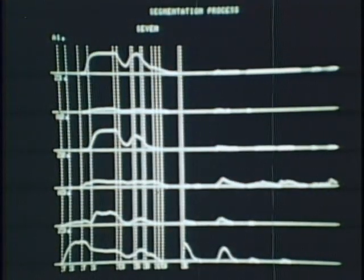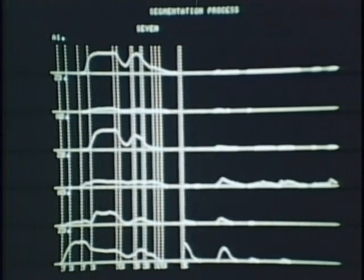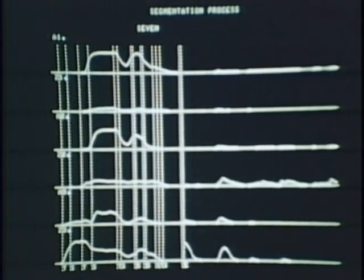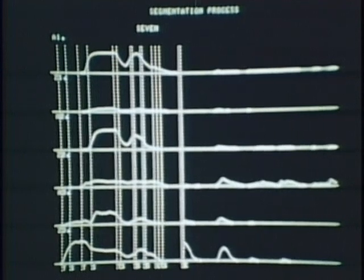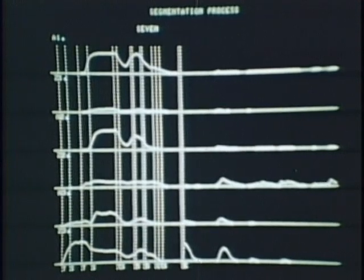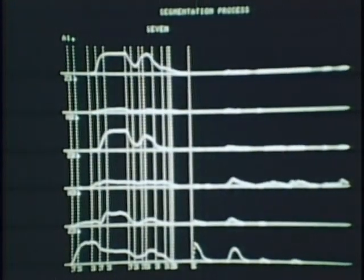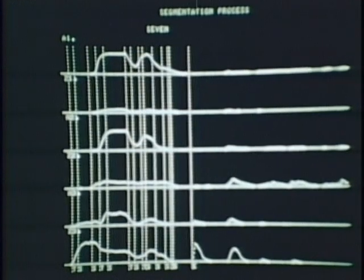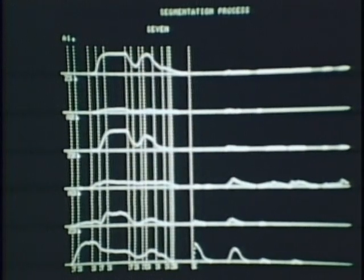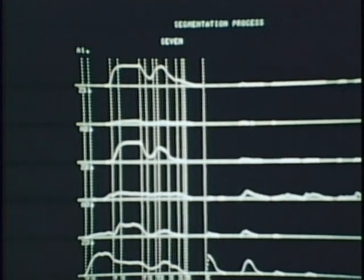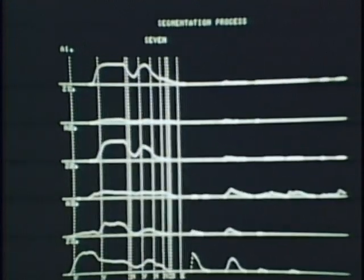This is an example of the analysis performed by the computer for the utterance '7.' Parameters extracted from the speech wave are used to divide the utterance into segments with approximately similar characteristics. These primary segments are further subdivided if the within-segment variability is too high. Some of these segments are recombined and we assign labels such as vowel, fricative, et cetera, to each of these segments.